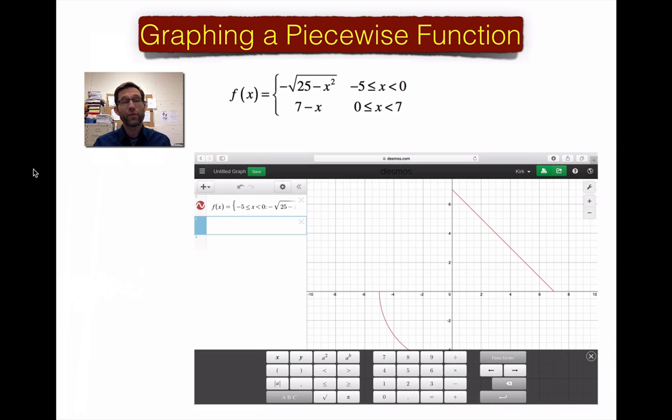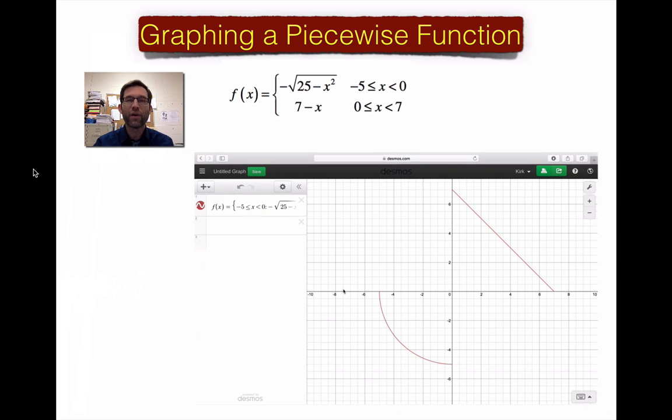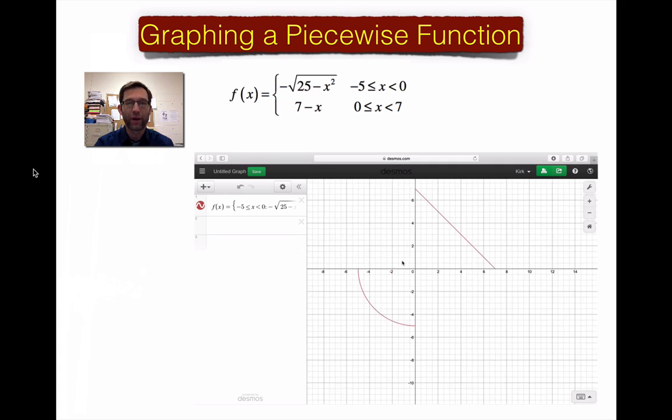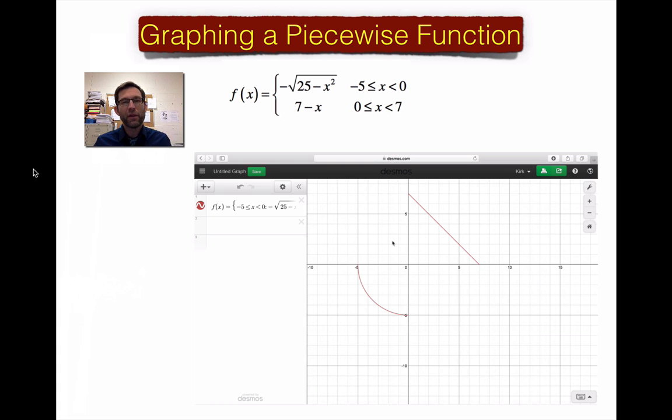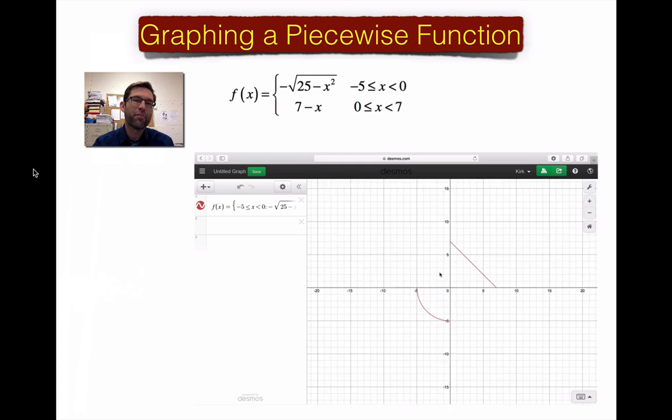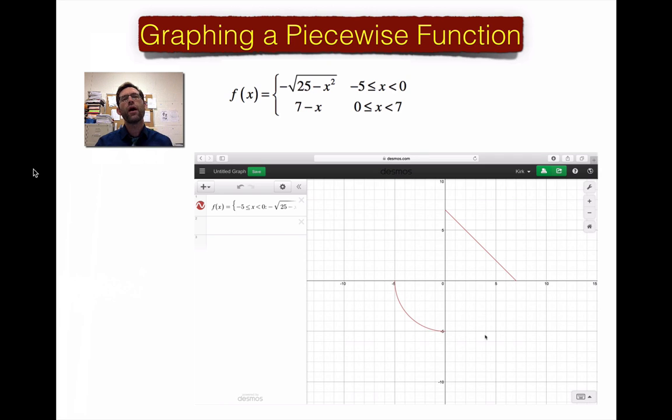And what I get is I get this very nice piecewise function. I can zoom in, zoom out to try to get a good window for it. But ultimately I get this piecewise function that is part semicircle, part linear. Now, one thing that I've talked to my students about is that Desmos is not very good at putting closed circles versus open circles. And that's because it's a really good program. And open circles or holes, you can't actually see them.